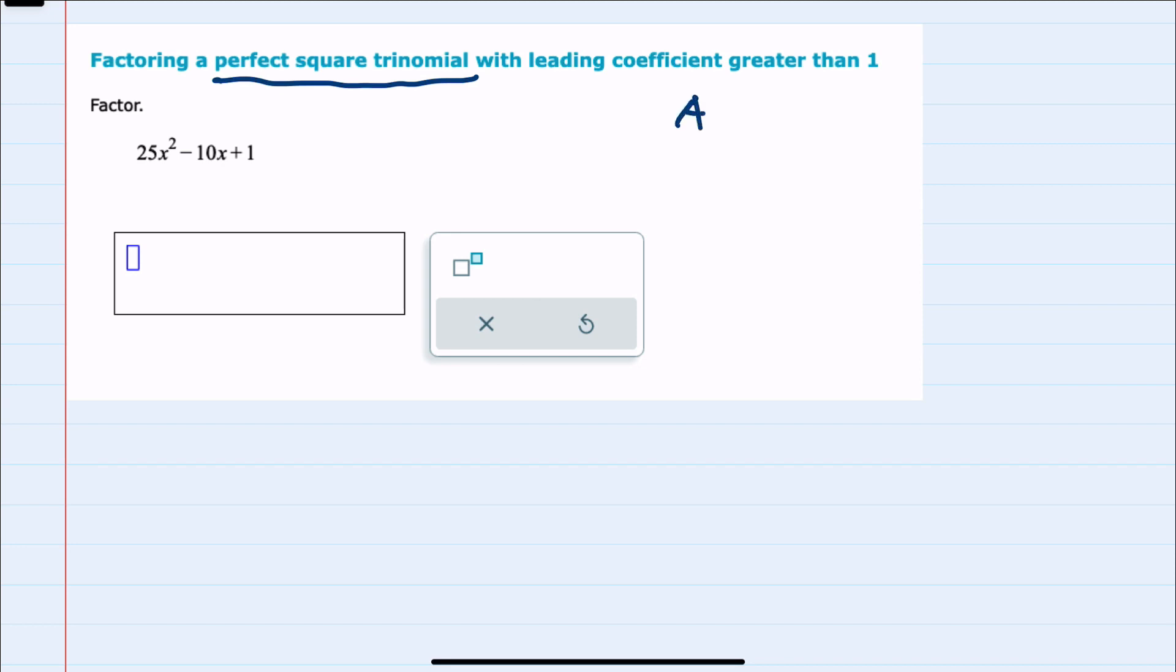I can recall that whenever I have a perfect square trinomial, that means (a + b)² would be a² + 2ab + b², or (a - b)² would be a² - 2ab + b².